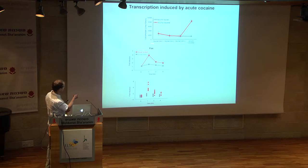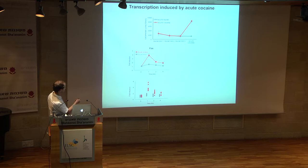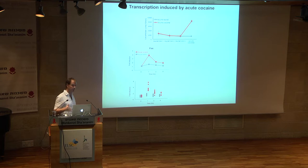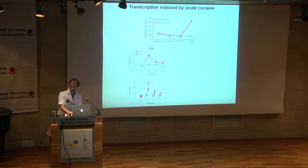Looking at the classic immediate early gene FOS, which is used as a global marker of neuronal activity, it very clearly differentiates between re-exposure to saline and acute exposure to cocaine, suggesting that perhaps re-exposure to saline is not salient for the mouse. The neurons in the nucleus accumbens do not make a decision to go into transcription. Perhaps transcription is a measure of salience of an event.